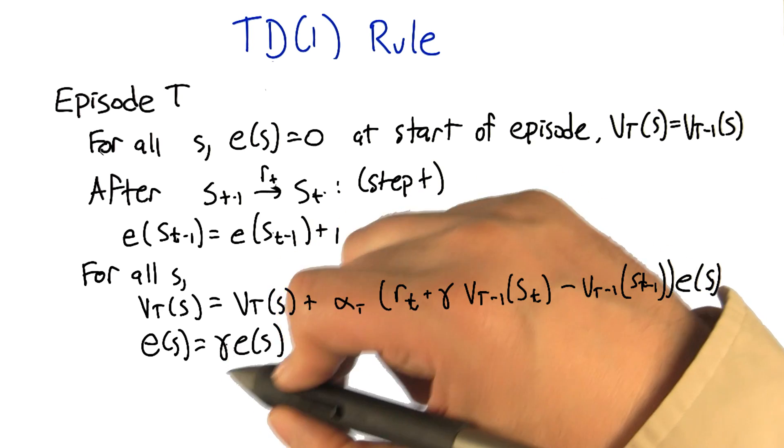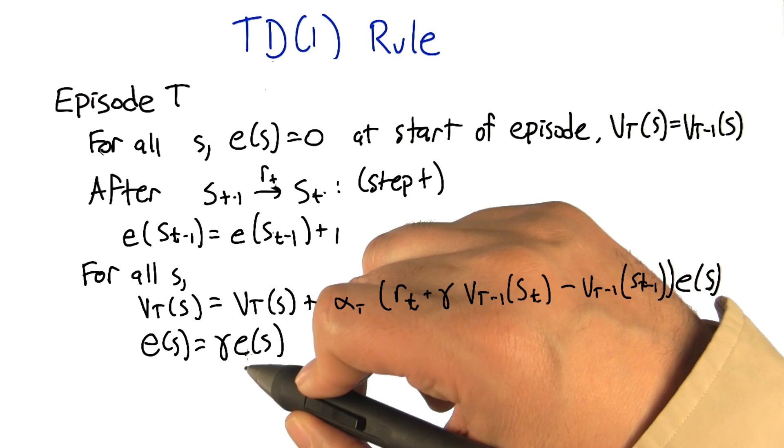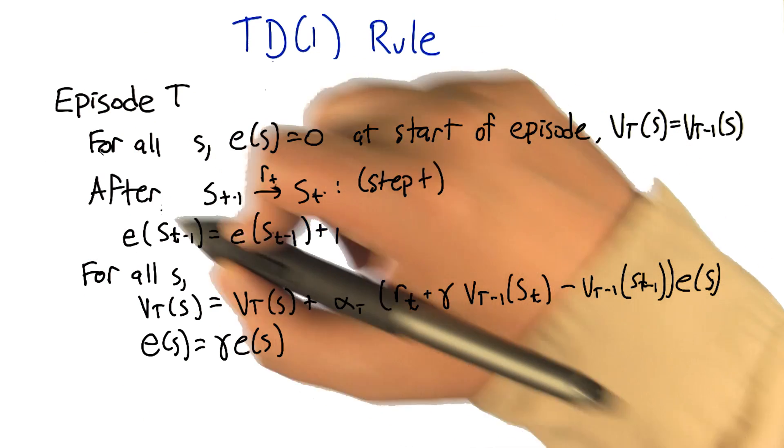Then, we decrease or decay the eligibility for those states. And then we're back up to the next step.